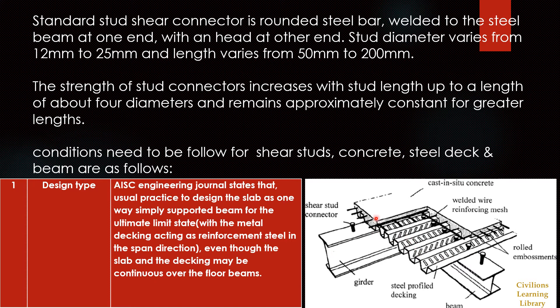The deck seat is placed over the steel beams, running parallel to the main girder. Over the deck seat, concrete is poured with wire mesh. The shear studs are welded over the top flange of these steel beams.